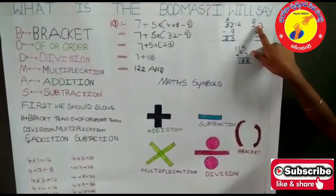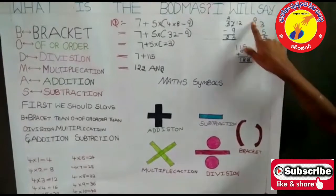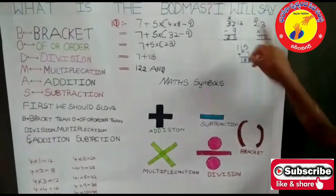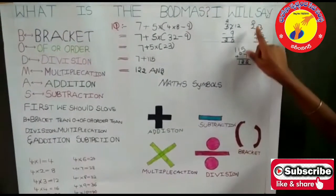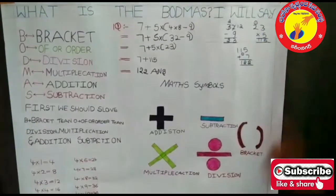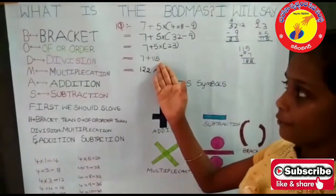So 5 threes are 15, so 5, 1 carry here. So 5 twos are 10. So 10 plus 1 carry, 11. So it will become 115.